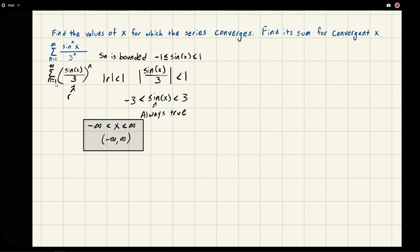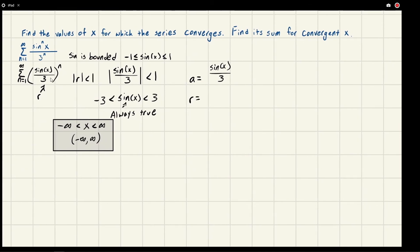Recall that this is a geometric series because it's just raised to n, and this would be the common ratio r. For the first term a, that would just be when n is one, and so that gives us sine x over three.